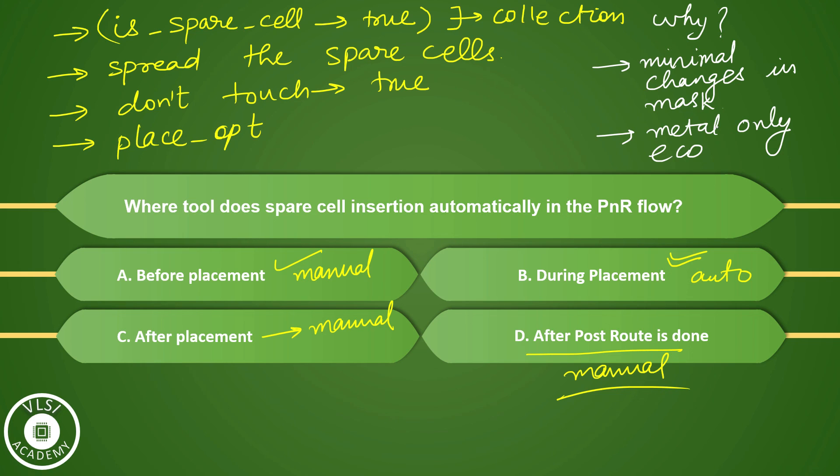So we only need to change some metal mask and not the base layer mask. We need it because it is not changing your base layer mask; only metal layer masks are changing. That is why it is called as minimal change, and that is why it is very important, because at the time of your metal tape out it becomes very important to have spare cells in the design.